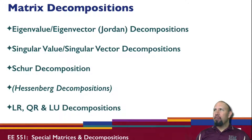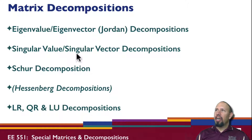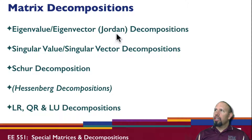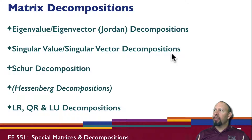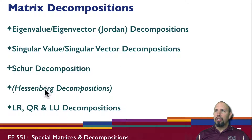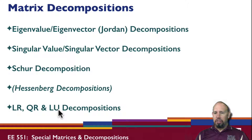We're talking now about matrix decompositions. Here are some of the decompositions that are commonly used: eigenvalue-eigenvector, or Jordan decompositions; singular value-singular vector decompositions; Schur decomposition; Hessenberg decompositions; and then some other decompositions.